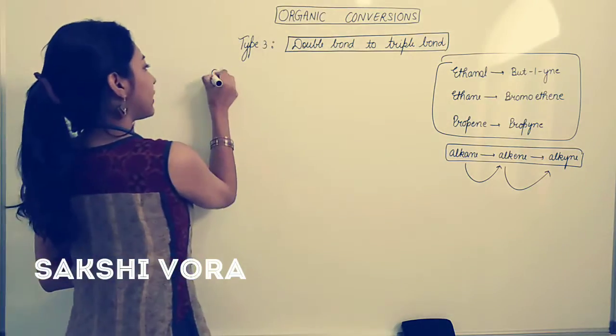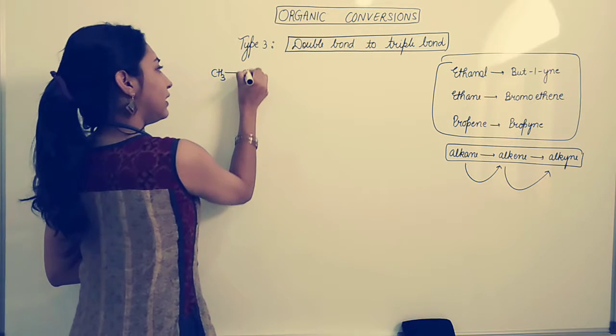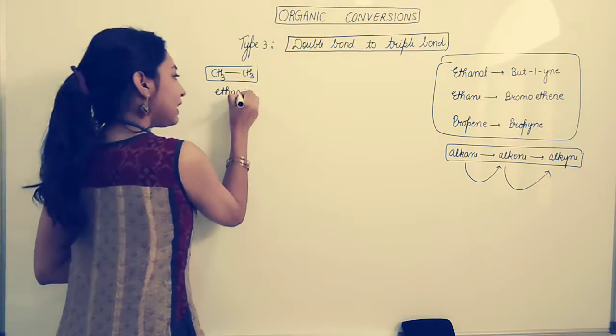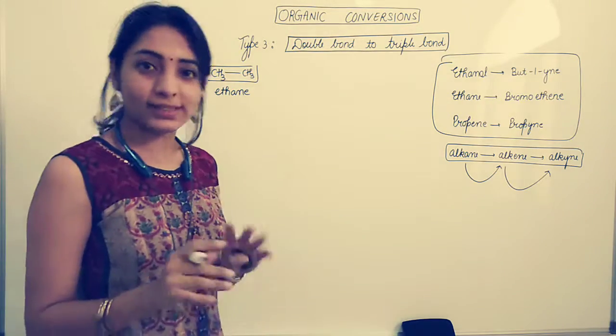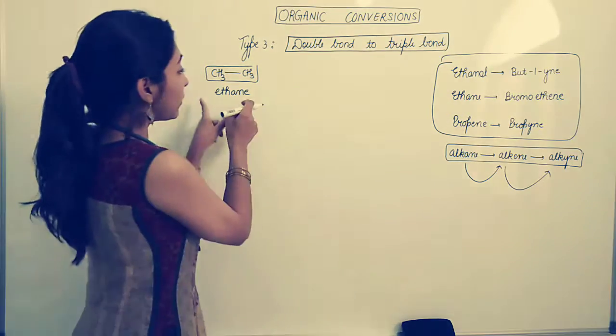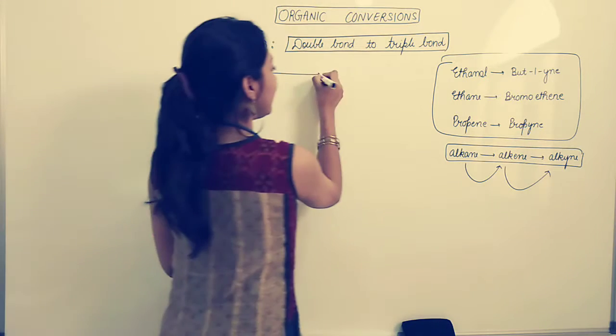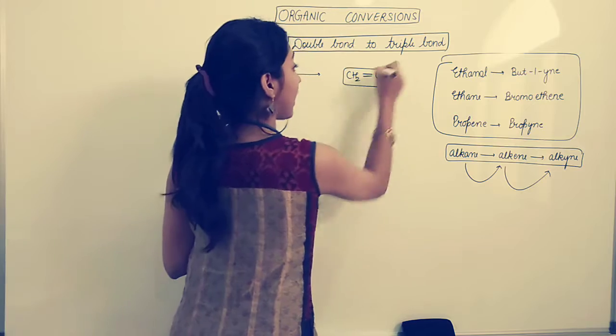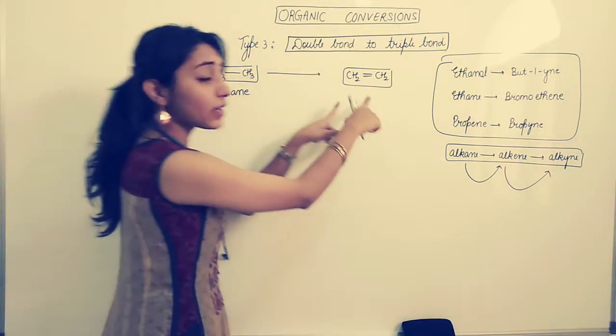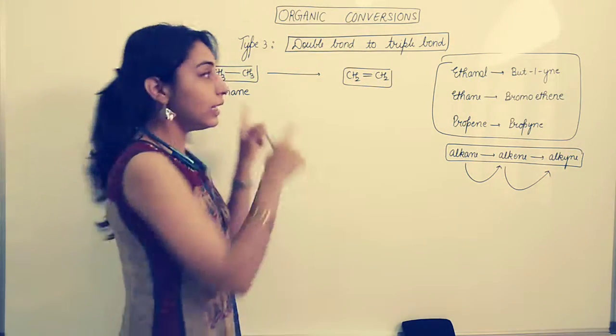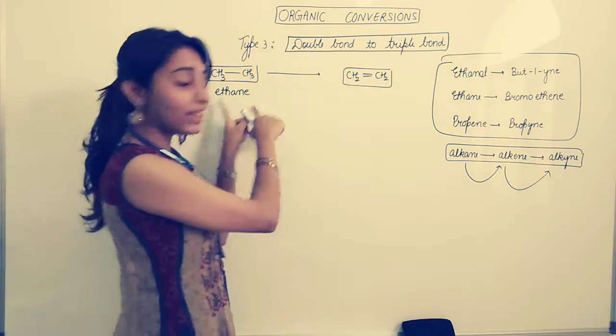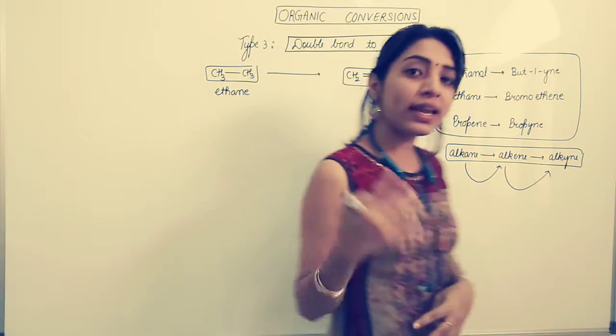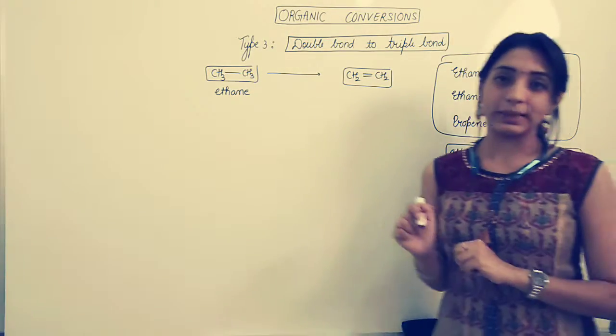Let me tell you one trick. Suppose you have any particular alkane, let it be CH3-CH3. This is ethane that is given to you. I want to convert this ethane to ethene CH2 double bond CH2. That means I want to introduce a double bond in the structure. The question is, how can an alkane be converted to alkene?